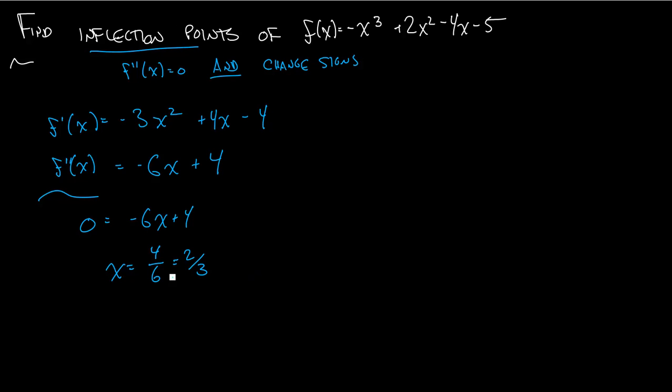And to make sure that this 2 over 3 is an inflection point, now notice it satisfied some of it. If I plug in the 2 over 3 into x here, I'll get 0, which is good. But I need to make sure that f double prime of x changes signs. So what I'm going to do is I'm going to draw this number line that you'll start seeing more and more of.